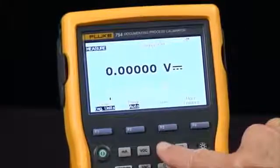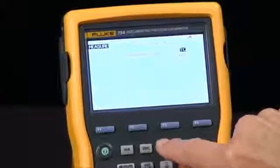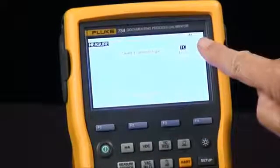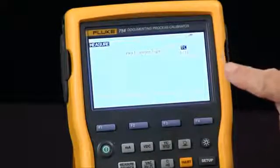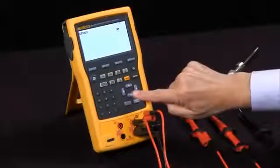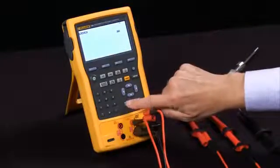All we have to do at this point is push the thermocouple RTD button and we get a choice of a thermocouple or an RTD. I'm going to arrow down, highlight the RTD, and hit enter.